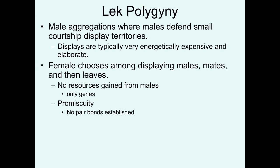The last category of polygyny is lek polygyny, where males aggregate in small display territories trying to convince females to mate with them through energetic displays and elaborate traits signaling their quality. Females visit leks, look among the displaying males, choose one to mate with, and then leave. The female gets only the genes associated with the male she mates — no resources are transferred — and because there's no long-term pair bond, many consider this better categorized as promiscuity.